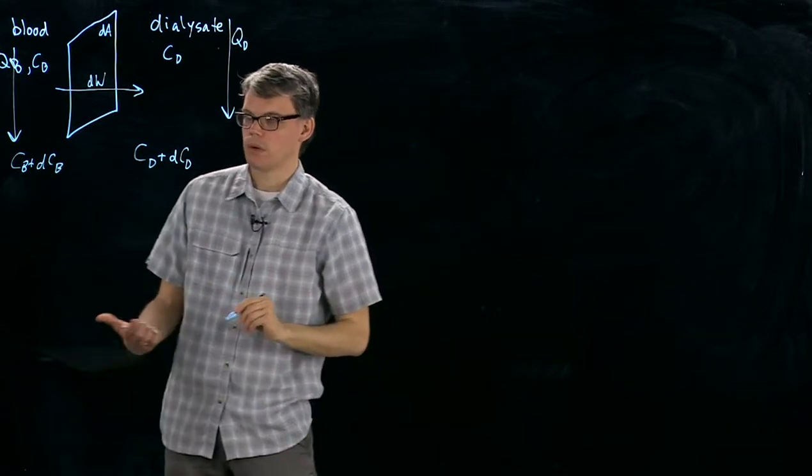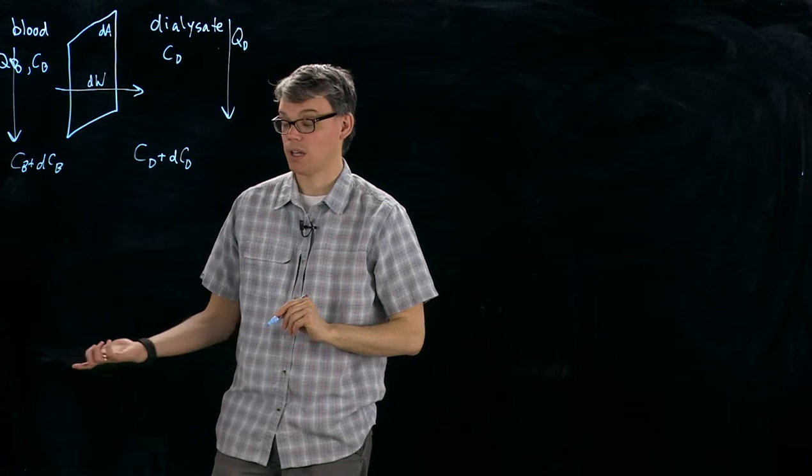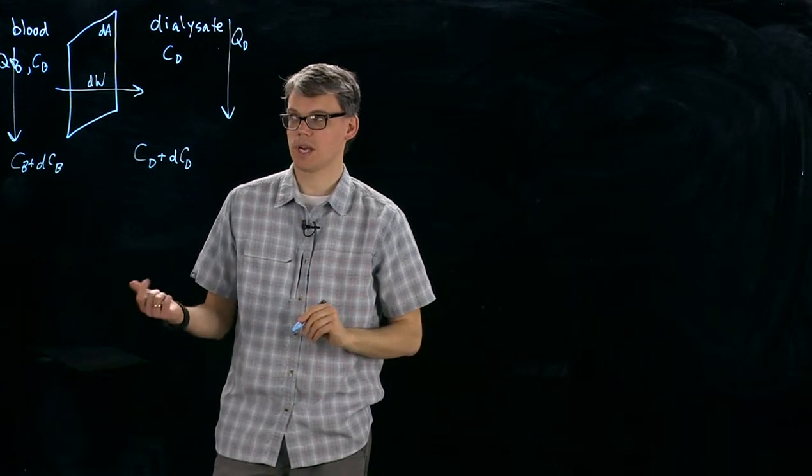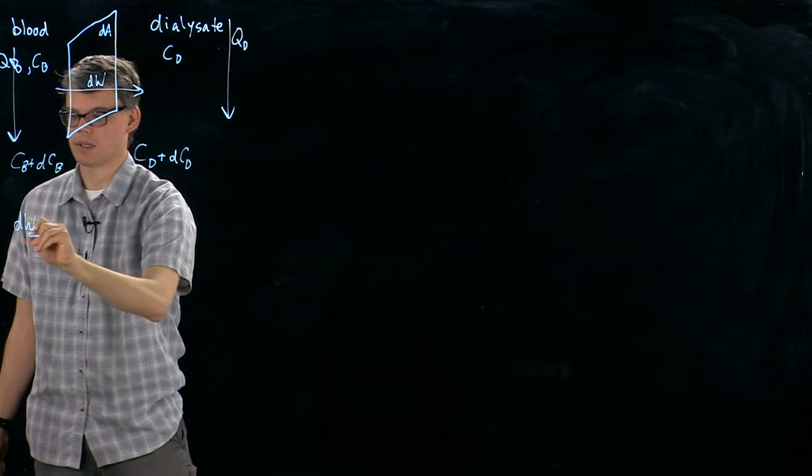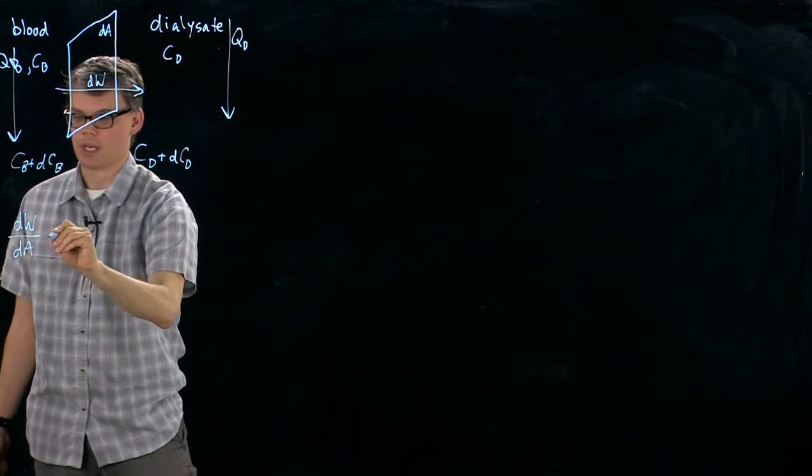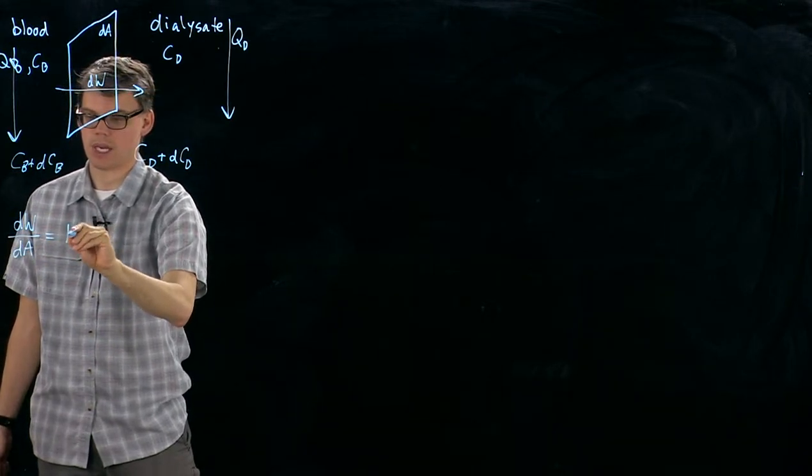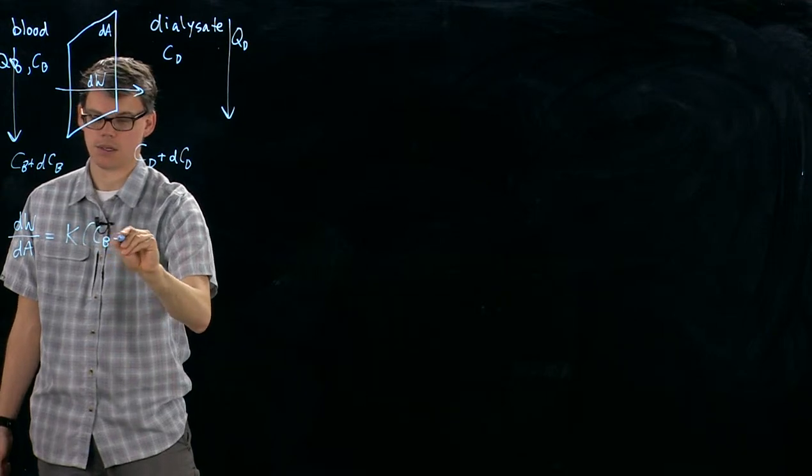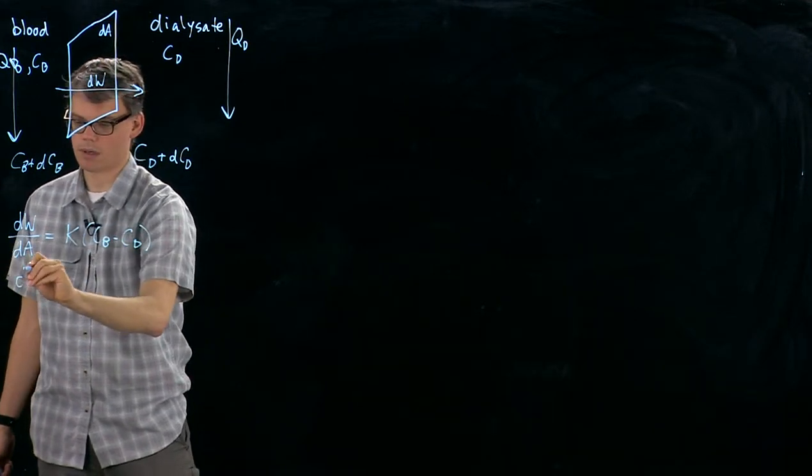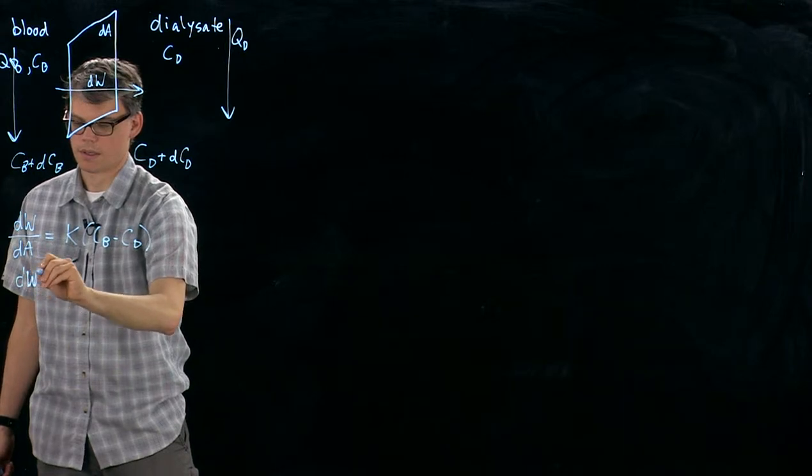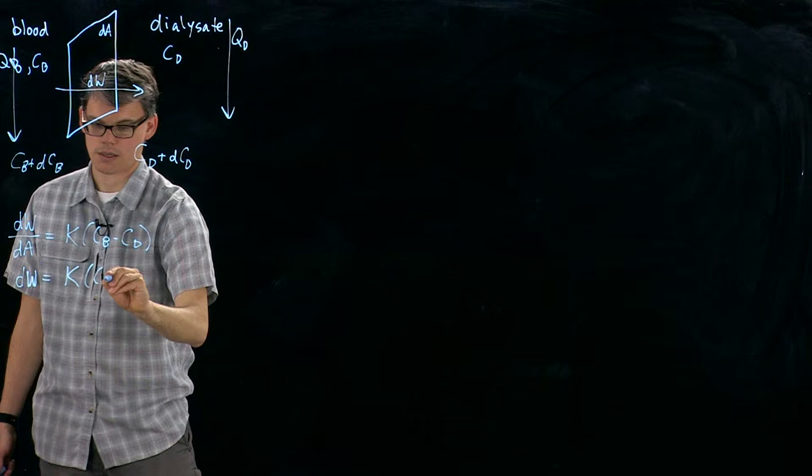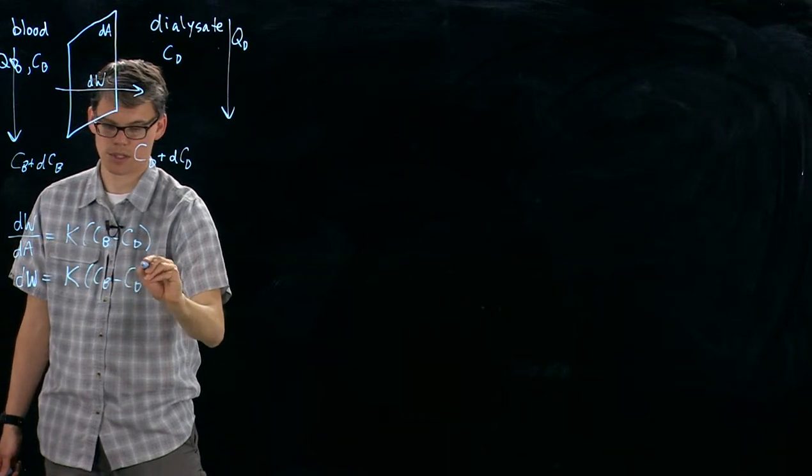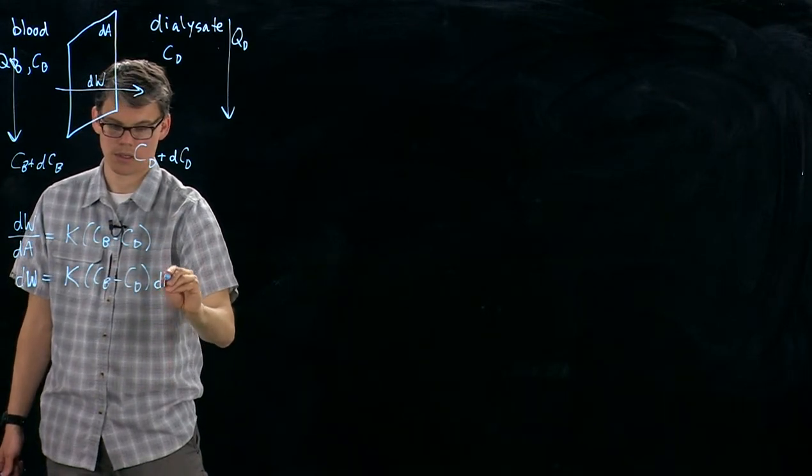So first, let's think about what we do know. Well, we know the flux from last time, and flux is just mass transferred per unit area. So in our case, we can look at dW/dA, and that is equal to K(CB - CD), or that little bit that's transferred is equal to K, the difference in concentration, times dA.